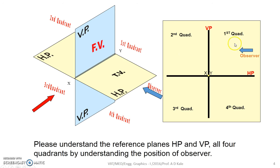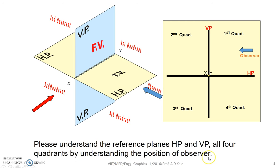This is the position of the observer: first quadrant, second quadrant, third quadrant and fourth quadrant. Please understand the reference planes — horizontal plane and vertical plane — and all four quadrants by understanding the position of the observer.